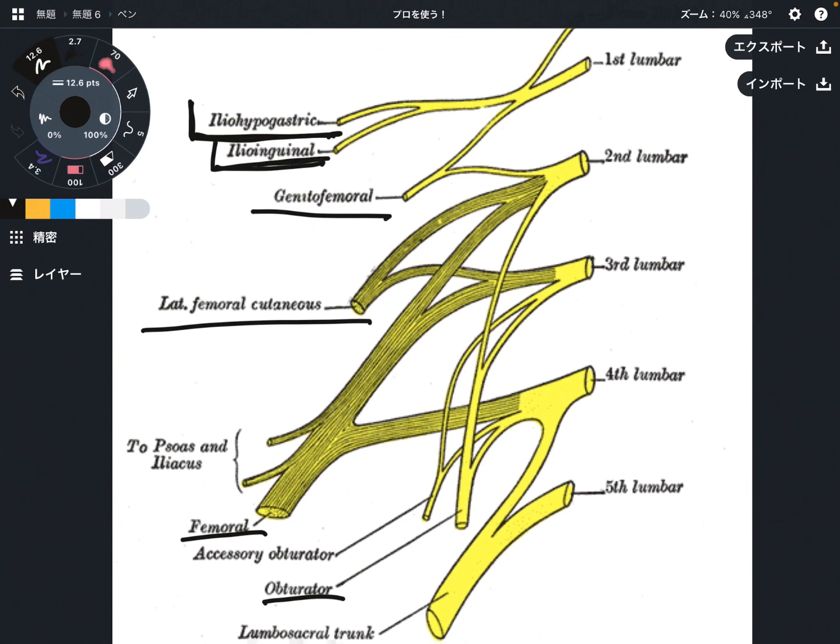Then second one is this one, ilioinguinal. The superior one is iliohypogastric. The inferior one is ilioinguinal. It's a little bit confusing, isn't it? It's same kind of letters. How to remember is the second part: iliohypogastric gastric or ilioinguinal. Which one is more superior? Gastro means the stomach. Which is on the superior part in the human body? Hypogastric. So the superior one is iliohypogastric. The second one, the inferior one is ilioinguinal. It's a simple way to remember.